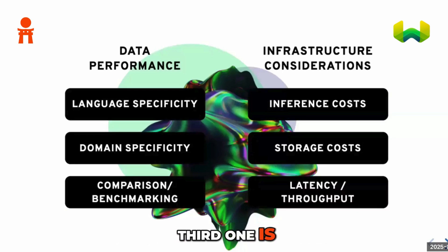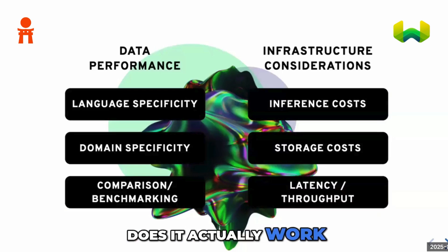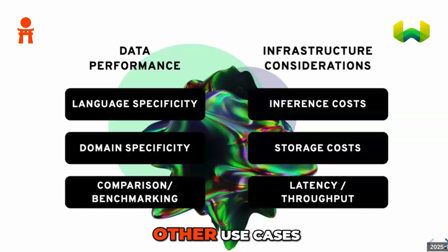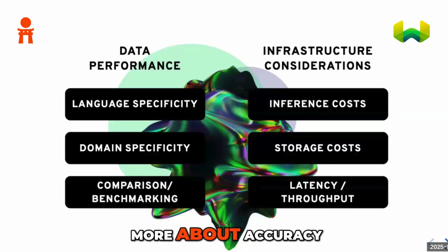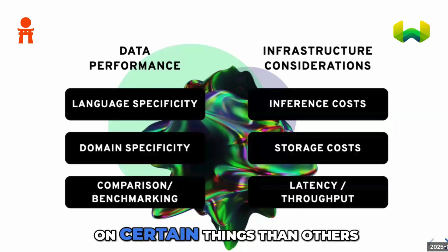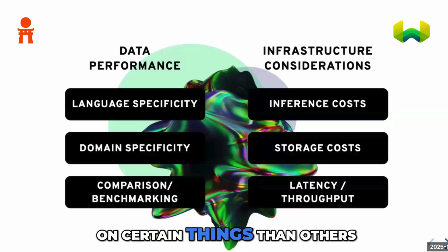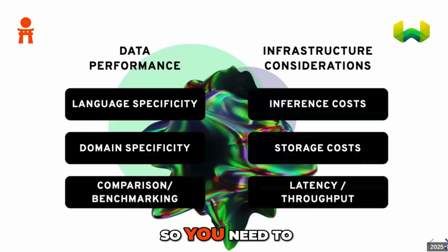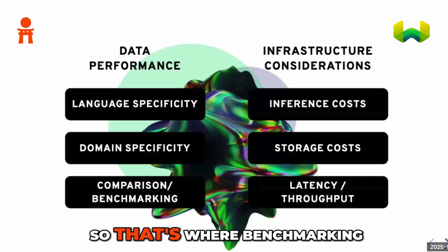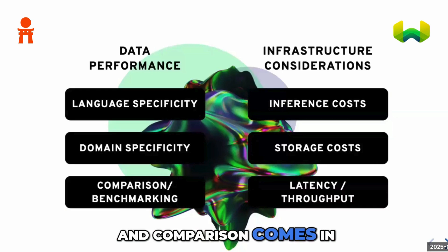The third subcategory is: does it actually work? Certain use cases will require a higher amount of accuracy than others. Or maybe you care more about accuracy on certain things, so you need to figure out how it works in general and also how it works on your own data. That's where benchmarking and comparison comes in.